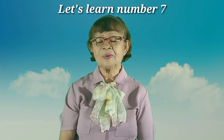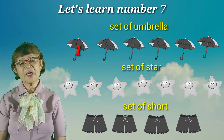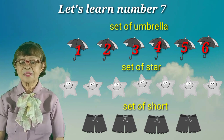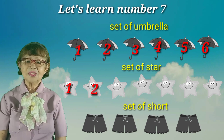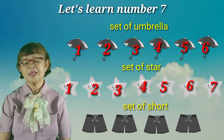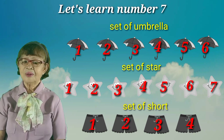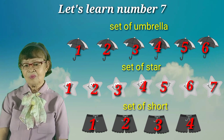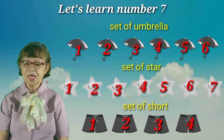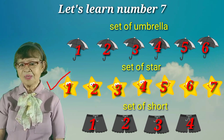Now class, let's go and learn our number 7. Let's color the set of seven yellow. The first set is the set of umbrellas which are six — let's count: 1, 2, 3, 4, 5, 6. We have 6 umbrellas. Now we go to the set of stars — let's count: 1, 2, 3, 4, 5, 6, 7. But we still have the set of shirts — let's count: 1, 2, 3, 4. We're going to check and color the set of stars because it has 7 elements. So we finish our number 7.